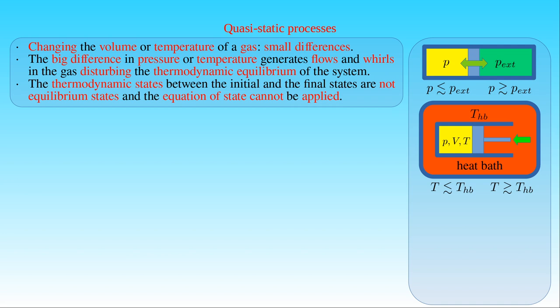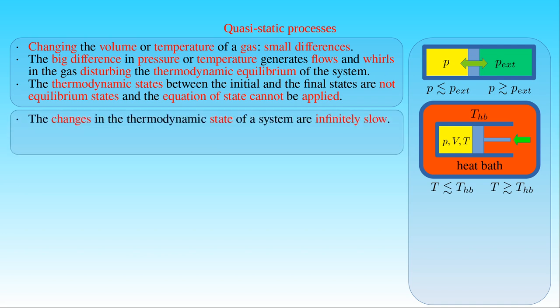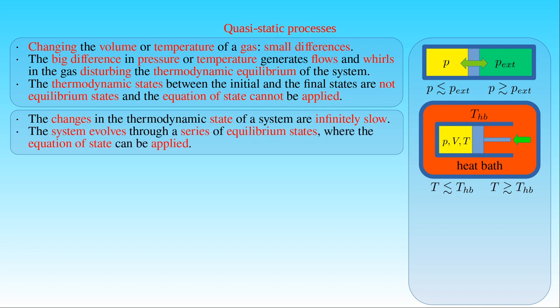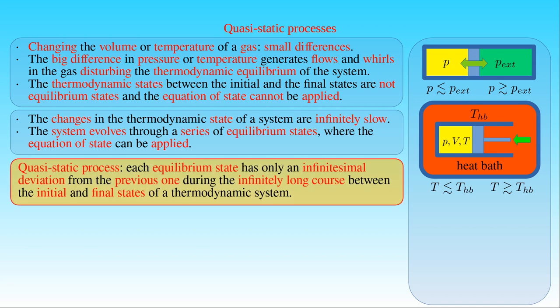If these conditions hold, then the changes in the thermodynamic state of a system are infinitely slow, and all the states which the system passes through are equilibrium states. In other words, the system maintains equilibrium during the infinitely slow thermodynamic process. It evolves through a series of equilibrium or static states, in which the equation of state can be applied. Such a thermodynamic process is called a quasi-static process, where each state has only an infinitesimal deviation from the previous one during the infinitely long course between the initial and the final states of the system.